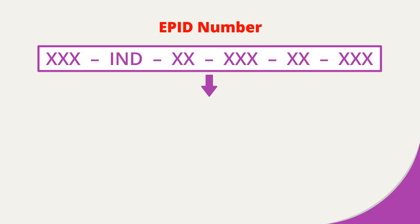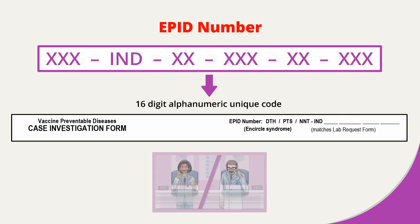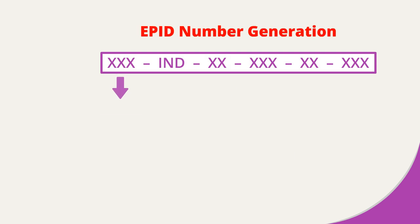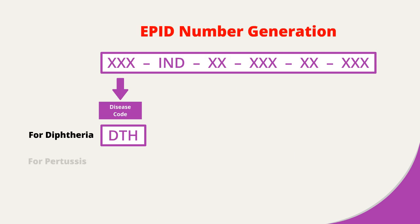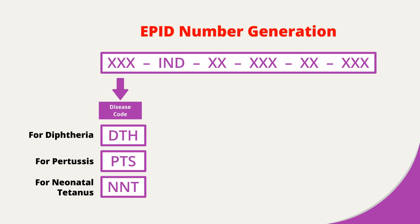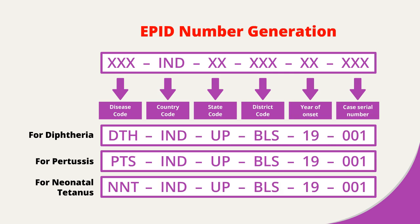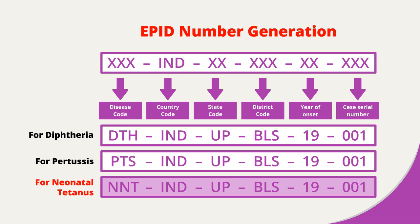The IPID number is a unique ID allotted to all DPT cases by the DIO or SMO office. It is a 16-digit alphanumeric unique code consisting of the disease code — DTH, PTS, or NNT — followed by country code, state code, district code, year of onset, and case serial number. Here are examples of IPID numbers generated for cases of diphtheria, pertussis, and neonatal tetanus.